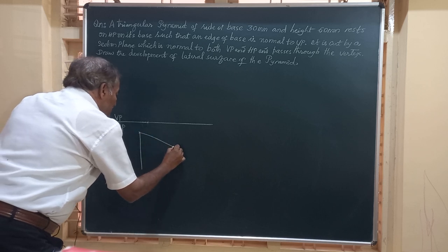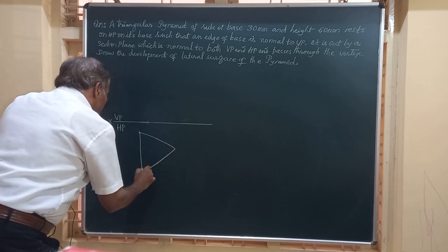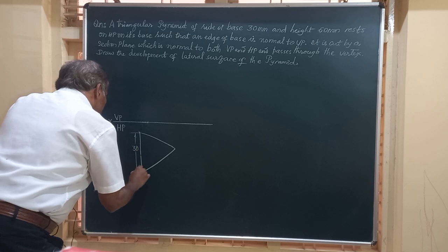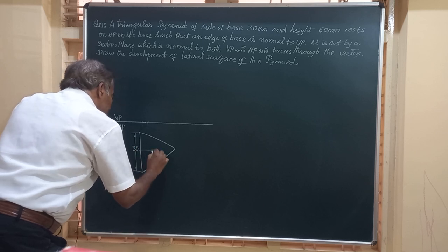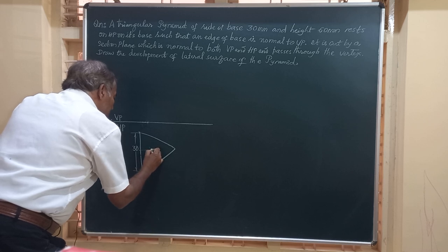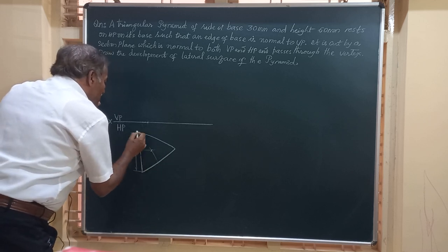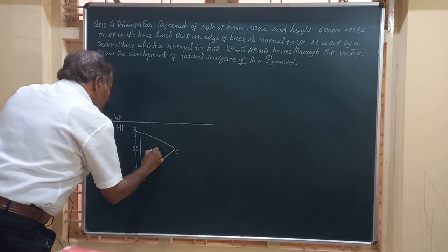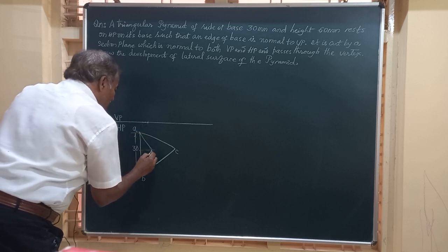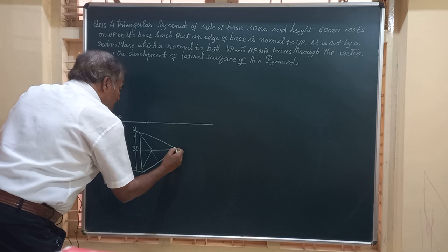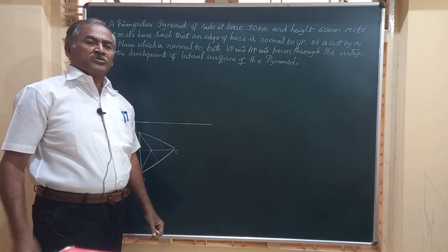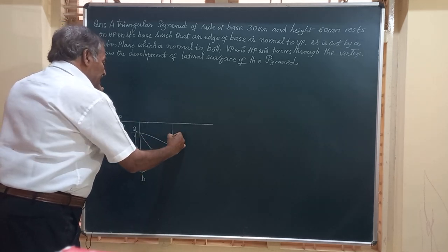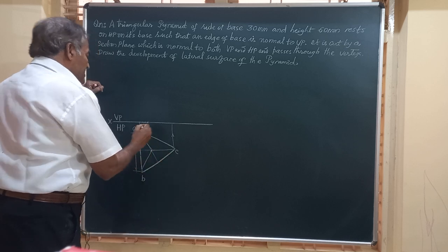In the top view I am going to obtain an equilateral triangle of side 30mm. We locate the center O by bisecting any two adjacent sides. We then join O to all the corners — that is O to A, O to B, and O to C. This is how the pyramid looks in the top view.